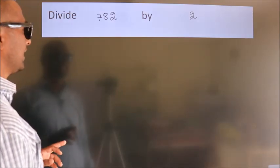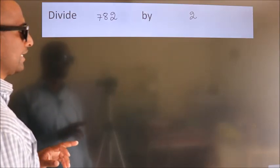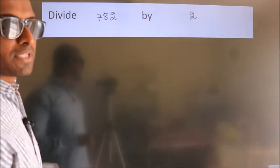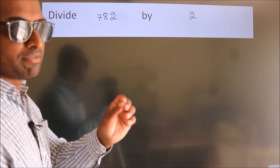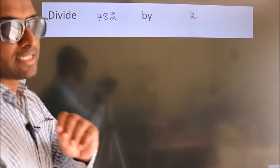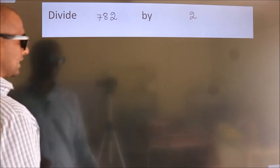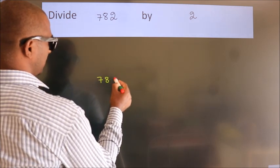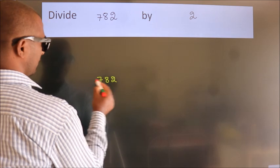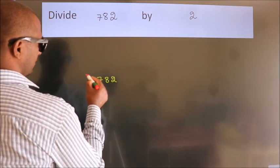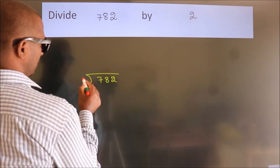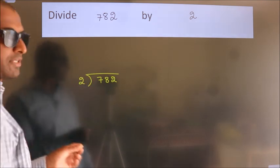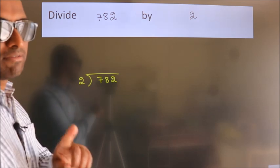Divide 782 by 2. To do this division, we should frame it in this way: 782 here, 2 here. This is your step 1.